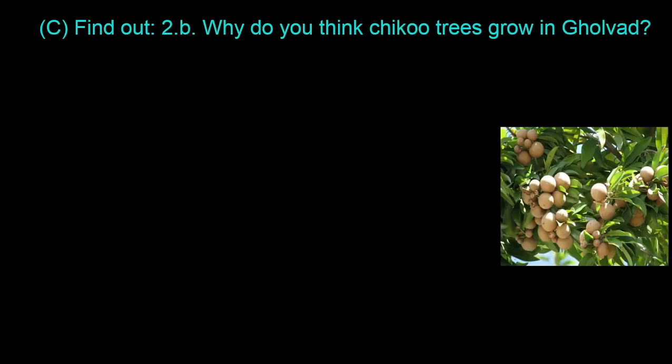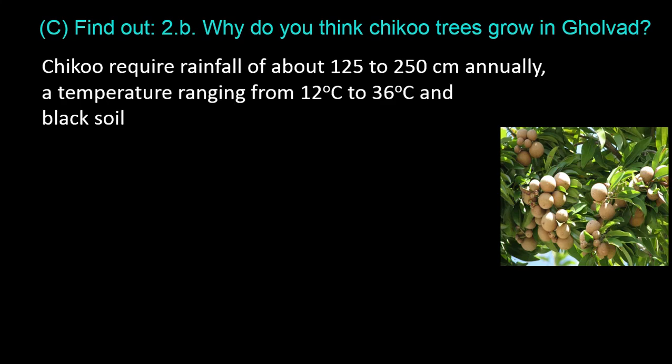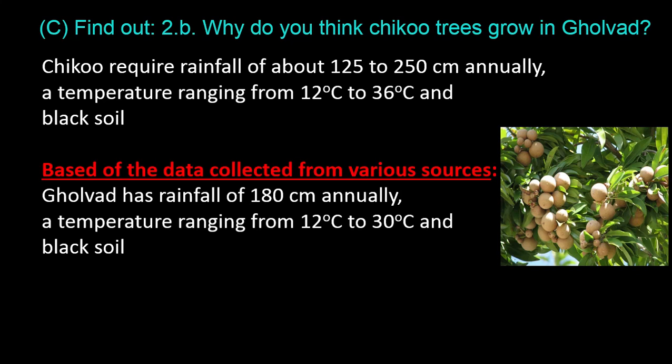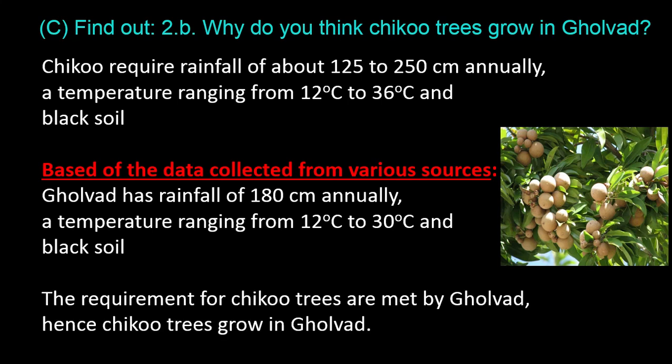Question C, Find Out, 2B: Why do you think Chikoo trees grow in Golvad? Chikoo requires rainfall of about 125 to 250 centimeters annually, a temperature ranging from 12 to 36 degrees Celsius, and black soil. Golvad has rainfall of 180 centimeters annually, a temperature ranging from 12 to 30 degrees Celsius, and black soil. The requirements for Chikoo trees are met by Golvad, hence Chikoo trees grow in Golvad.